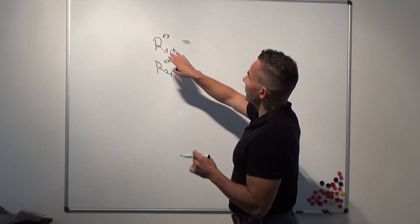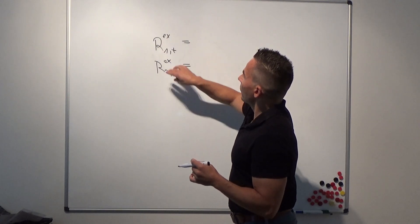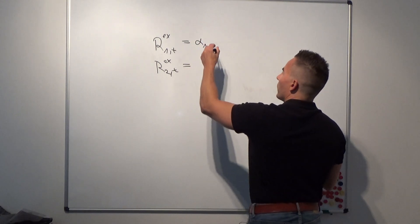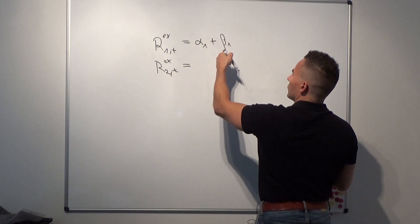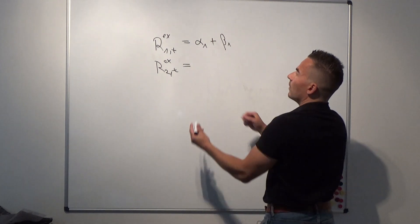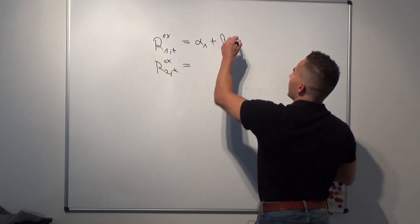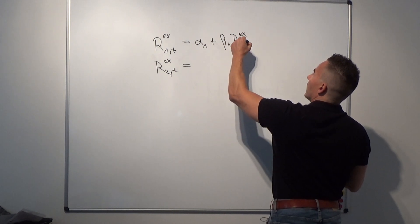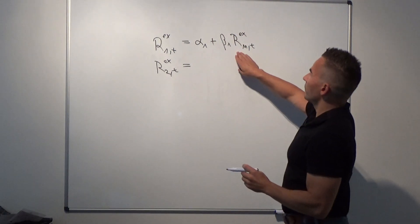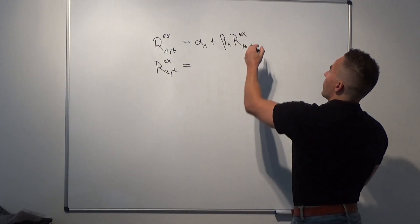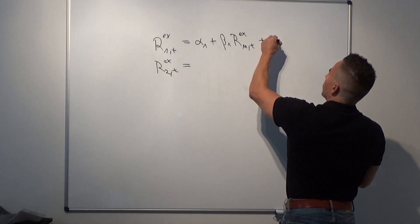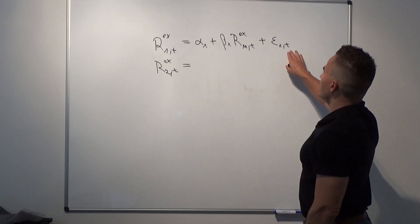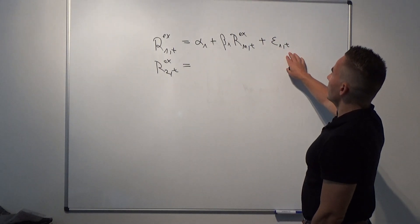We would regress the excess returns on an intercept term alpha 1, plus beta 1 — the exposure of test asset 1 against the market factor — times Rxmt (the market factor in excess form), plus an error term epsilon 1t covering the regression residuals.